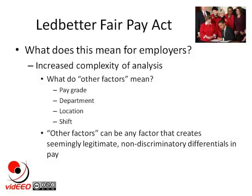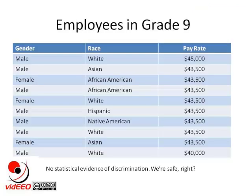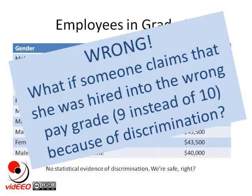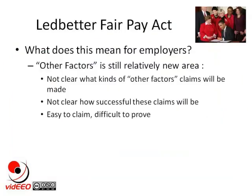To see how this works, let's look at an example. Let's say we're examining the pay rates in pay grade 9 for equity with respect to gender and race. The salaries in this pay grade range from $40,000 to $45,000, and there's no evidence of discrimination based on standard statistical analyses. But what if a female employee claims she was hired into the wrong pay grade — that she should be pay grade 10, but because of discrimination she was hired into pay grade 9 and is earning less?